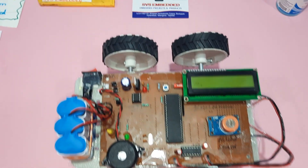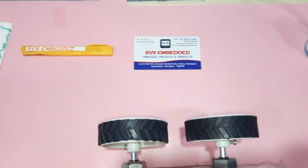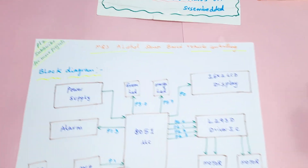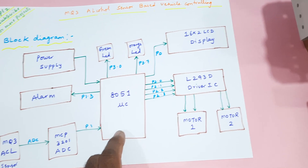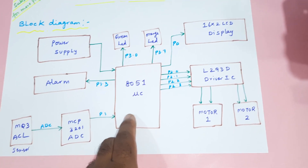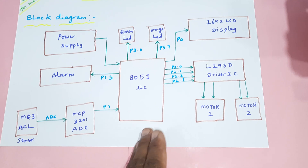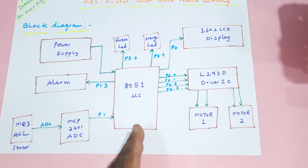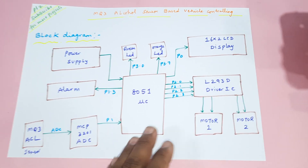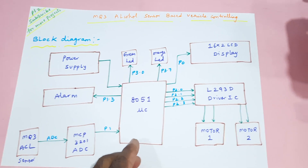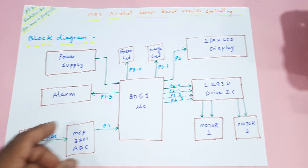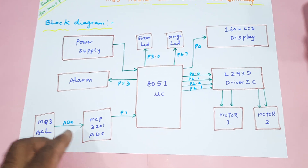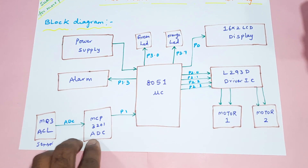Hi, we are from SVS Embedded. The project title is MQ3 alcohol sensor based vehicle controlling. We are using an 8051 microcontroller IC. Instead of 8051 you can use Arduino, Raspberry Pi Pico, or MSP430 — you can use any controller — but as per student requirement we are using the 8051 microcontroller and MQ3 alcohol sensor with MCP3201 ADC.